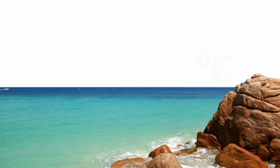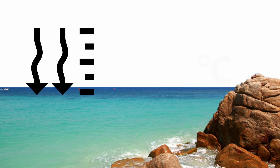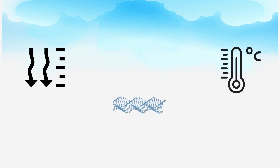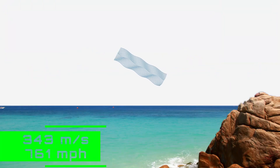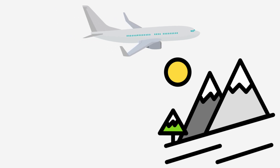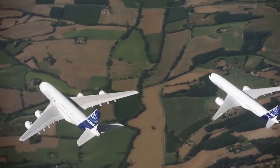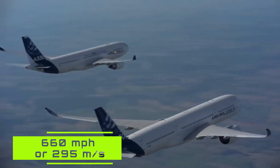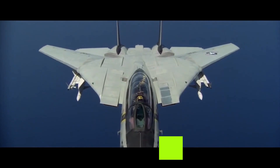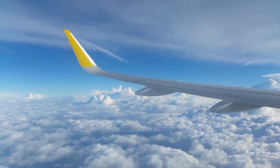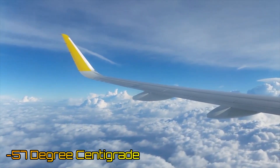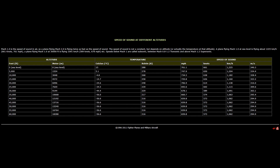The value of 343 meters per second is based on mean sea level pressure at 20 degrees centigrade. The speed of sound changes with ambient air pressure and temperature, and both of these parameters change with altitude. While the speed of sound may be 343 meters per second or 761 miles per hour at sea level, it is different at higher altitudes. For instance, at 11,000 to 20,000 meters where commercial and fighter jets fly, the speed of sound is slower at around 660 miles per hour or 295 meters per second, mainly because of the low temperature of minus 57 degrees centigrade. The table here shows this variation of speed of sound with altitude.